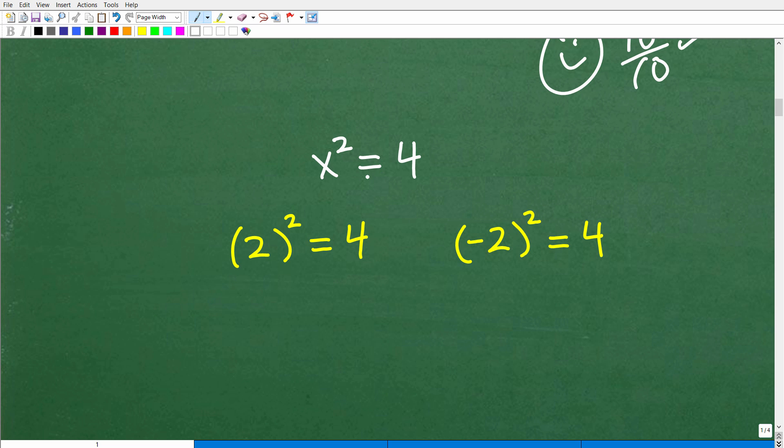So here is x squared is equal to four. Remember, x is equal to both positive and negative two, all right? So let's just go ahead and test this solution into this equation.